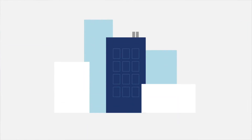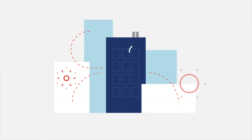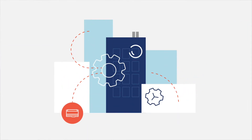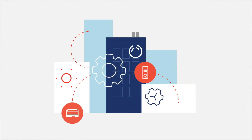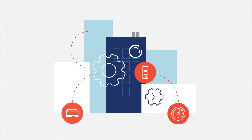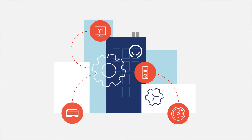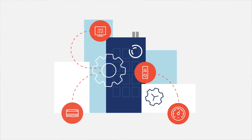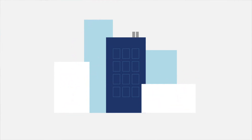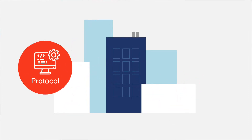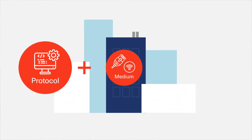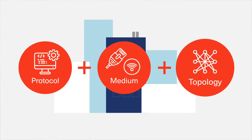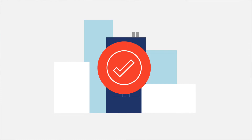All of a building's communication takes place within its equipment controllers and automation system, or BAS. So when you're designing your building's control system, you'll be making decisions regarding which protocol, medium, and topology will be best for your equipment, controls network, and your business goals.